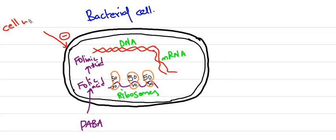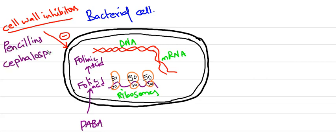Coming to drugs which inhibit cell wall. Cell wall synthesis inhibitors are Penicillin, Cephalosporins, Carbapenems, and Glycopeptides.